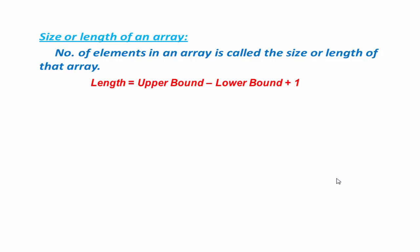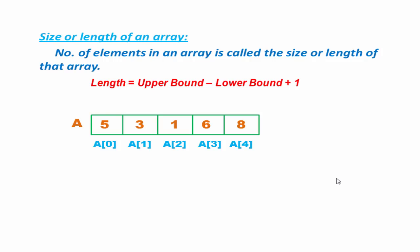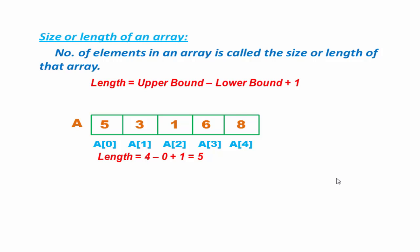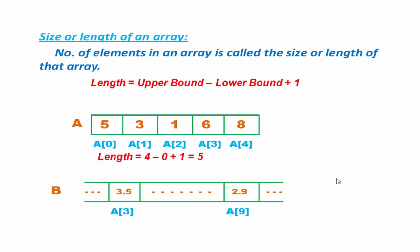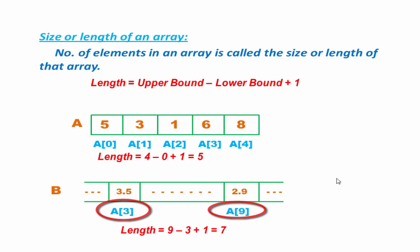Let us see an example. Here we take an array 'a'. The lower bound of array 'a' is 0 and the upper bound is 4. So the length of 'a' is 4 − 0 + 1, which equals 5. Let us see another example. Here we take another array 'b'. The lower bound of 'b' is 3 and the upper bound is 9. So the length of 'b' is 9 − 3 + 1, which equals 7. That means 'b' has 7 elements.